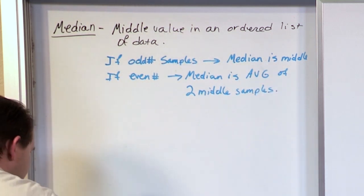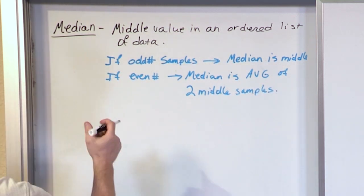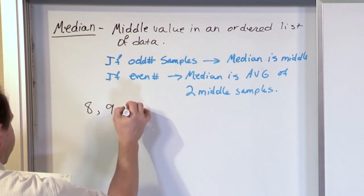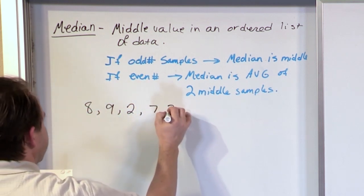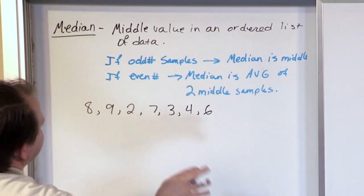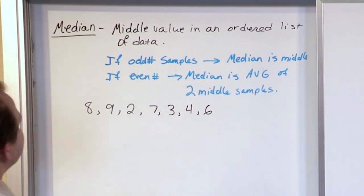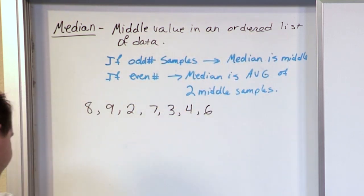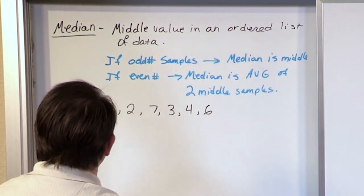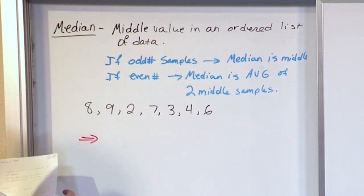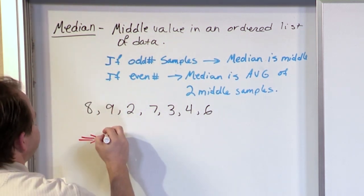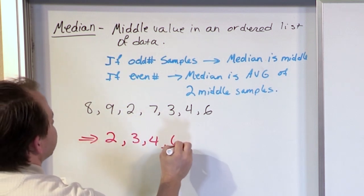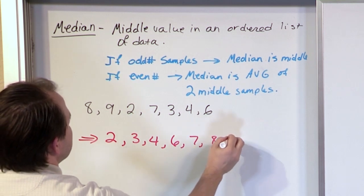All right, this looks like a lot of writing, but it's very, very simple, and I'll just show you that right now. What if I want to calculate the median of the numbers, 8, 9, 2, 7, 3, 4, and 6. And I say, what's the median of this? First thing you want to do is you want to find the middle value in an ordered list. So what we need to do first before we do anything else is order the list. So we want to change it around so that we have the smallest value first. So that would be 2, 3, 4, 6, 7, 8, 9.